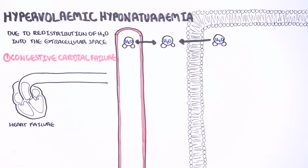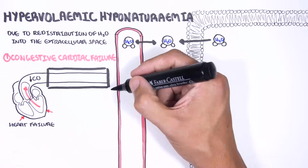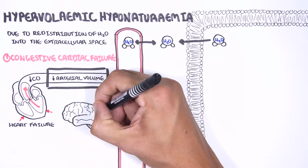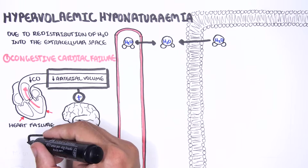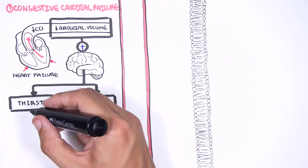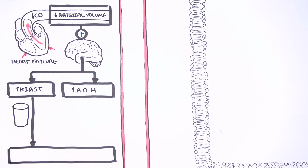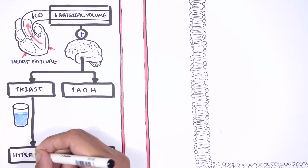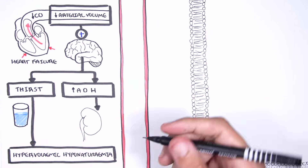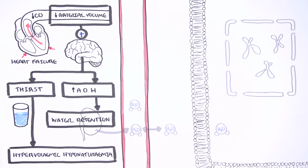In congestive cardiac failure, the heart is unable to pump blood out effectively. There is low arterial blood flow, resulting in increased thirst and release of antidiuretic hormone from the brain. There is plenty of sodium but more water, resulting in hypervolemic hyponatremia. The antidiuretic hormone — also known as ADH — stimulates water retention in the kidneys, further causing hypervolemic hyponatremia.